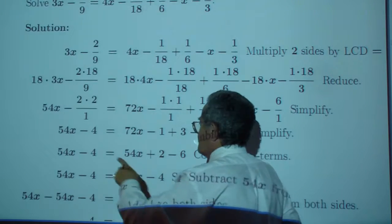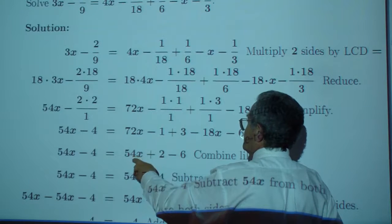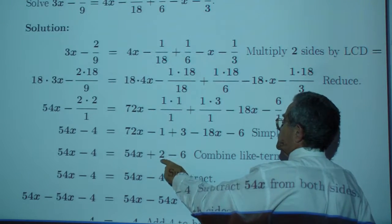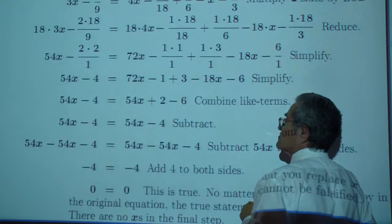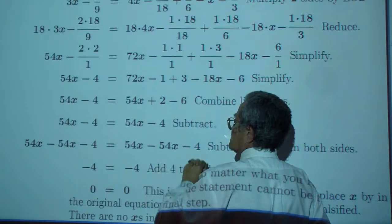That gives you 5x minus 4, which is 54x, 72 minus 18, and 2, that's 2 here, minus 6. So 5x minus 4, which is 54x minus 4.